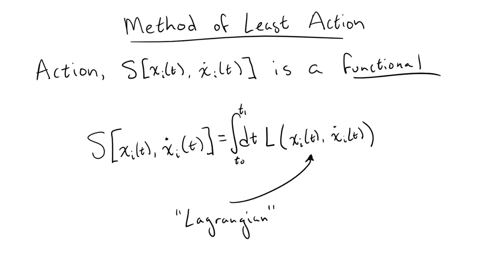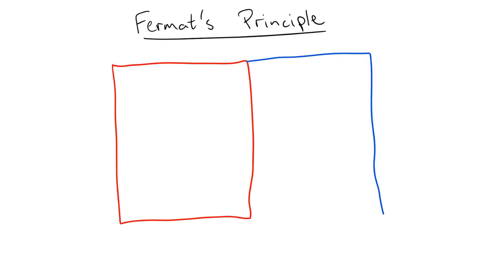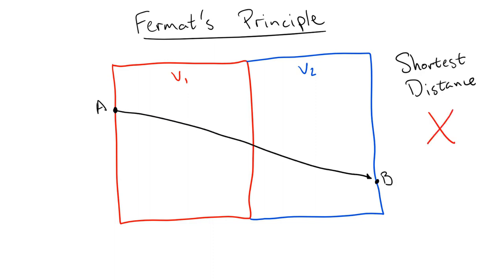Okay, so we have an idea of what the action is, but you may be asking, how do we get anything having to do with physics out of it? Well, the original idea comes from what's called Fermat's principle. Consider we have light traveling through two different media, and the light travels at different speeds in these two media. Fermat's principle tells us that the light will not take the path of least distance through the materials, but the path that takes the least amount of time.